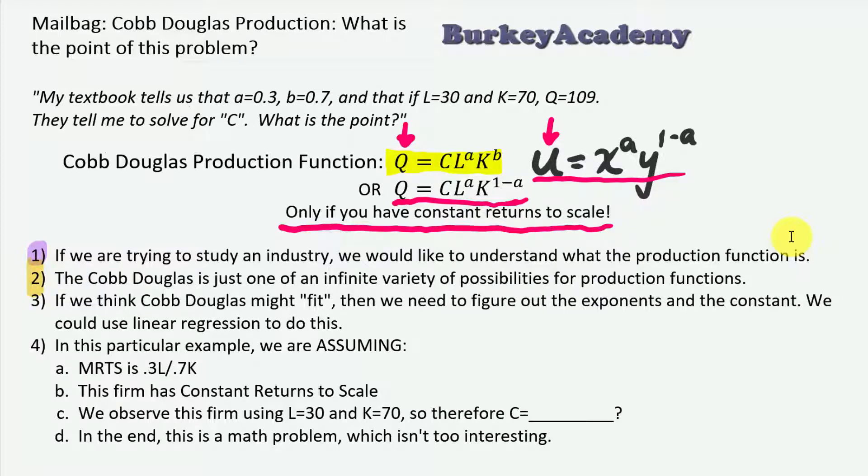Second, we want to understand is the Cobb-Douglas a good way to represent this production function. The Cobb-Douglas is just one of an infinite variety of possibilities that we might see in an industry for a production function. So maybe the data fits it, maybe it isn't. So if we think the Cobb-Douglas might be a good fit, then what we want to do is figure out what are those exponents and what is the constant that we need to use.